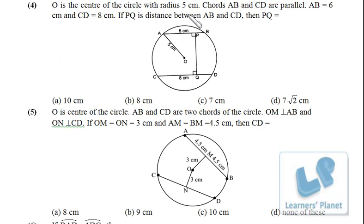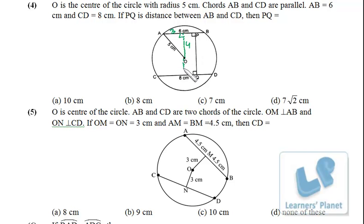Next: O is the center of a circle with radius 5 cm. Chords AB and CD are parallel, with AB = 6 cm and CD = 8 cm. PQ is the distance between AB and CD. I drop a perpendicular from the center. For AB = 6, half-length is 3; with radius 5, the distance from center to AB is 4. For CD = 8, half-length is 4; with radius 5, the distance from center to CD is 3. Total PQ = 4 + 3 = 7 cm.